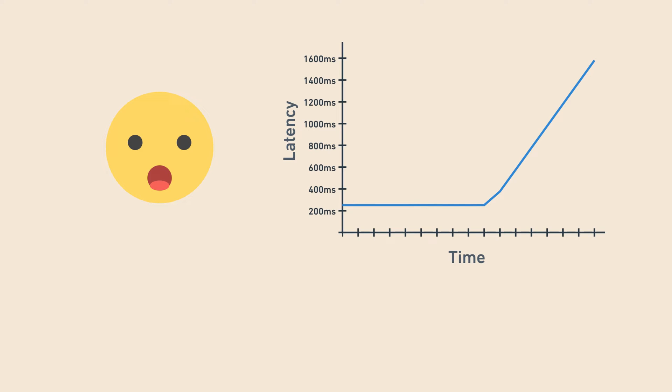Imagine you're on call for the service you work on and you get paged in the middle of the night. Phone blaring, you stumble out of bed, sleepily turn on your computer, and look at your metrics. Looks like request latency went up a lot and users are getting errors. How do you figure out what's going on?